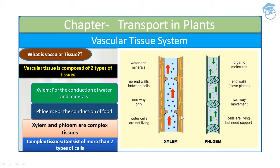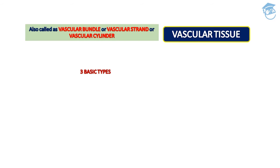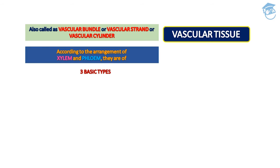Phloem conducts organic molecules. Unlike xylem, it has end walls called sieve plates. Phloem allows two-way movement — from down to upside and from upside to downside — and its cells are living but need support. Vascular tissue is derived from procambium and is also called vascular bundle, vascular strand, or vascular cylinder.